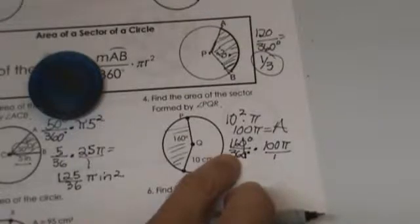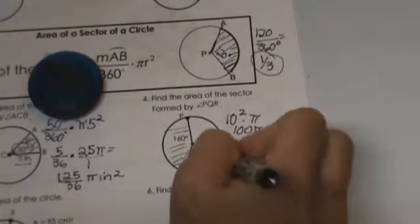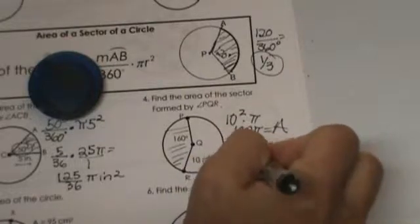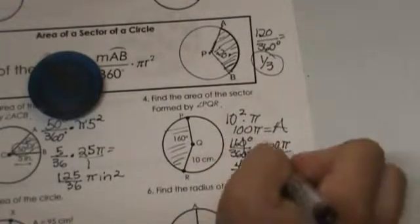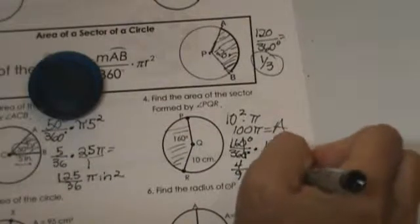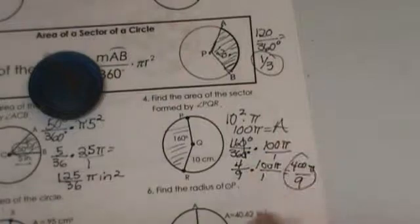They are both divisible by 4 so I can reduce that to 4 over 9. 4/9 times 100 pi and that is going to give me 400 pi over 9, and there is my answer.